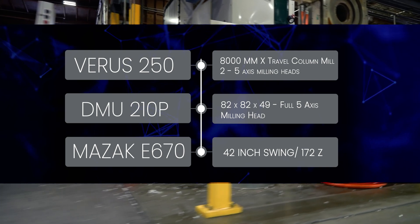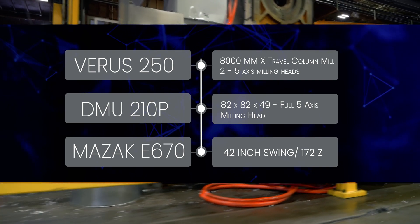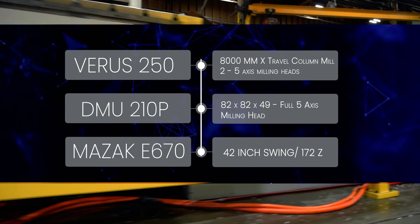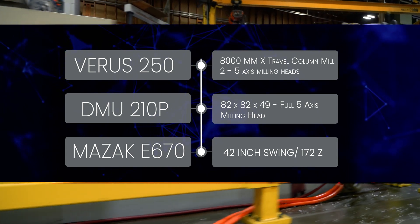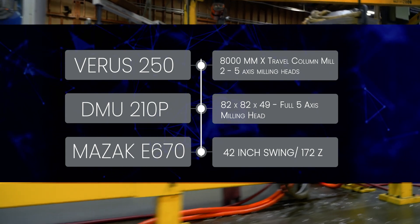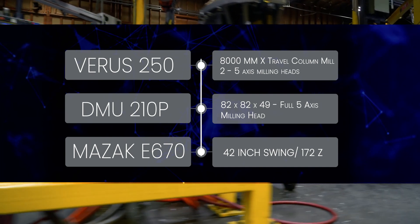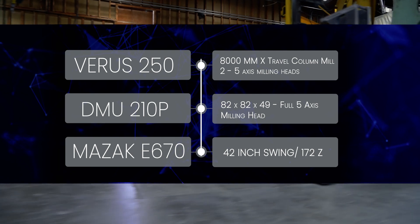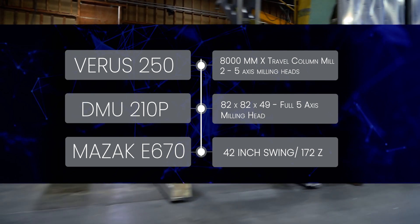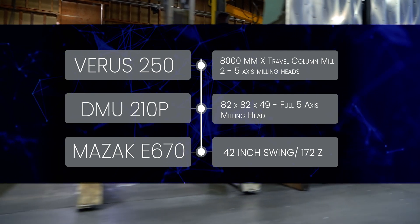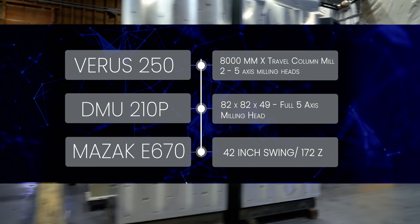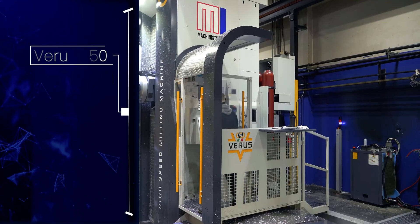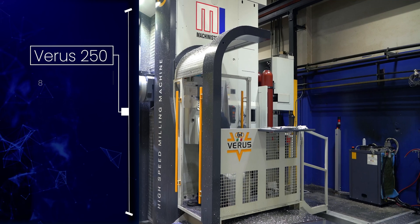We have some unique machine tool assets here at MI, like our Veris 250 — an 8,000 mm X traveling column mill with two different 5-axis milling heads. The DMU 210 is 82 by 82 by 89 inches with a full 5-axis portal milling head. We also have two Mazak E670 mill turn lathes that are 42 inch swing, 172 inches in Z.